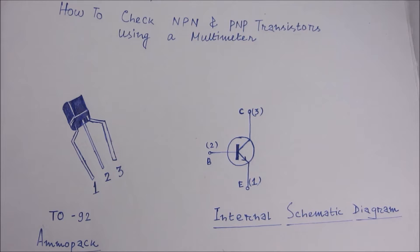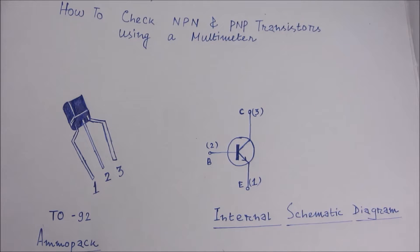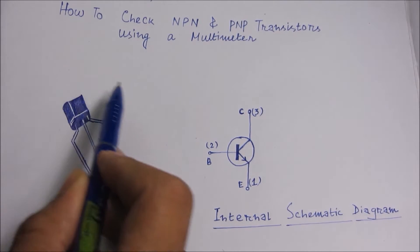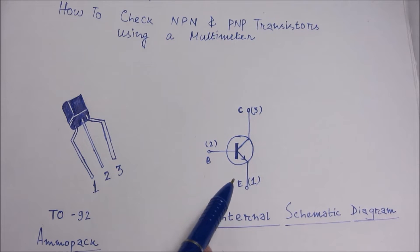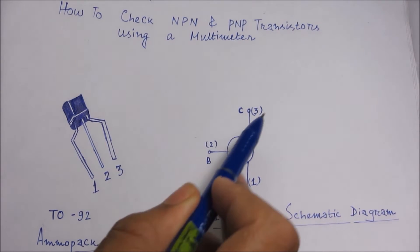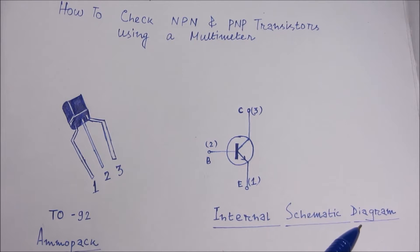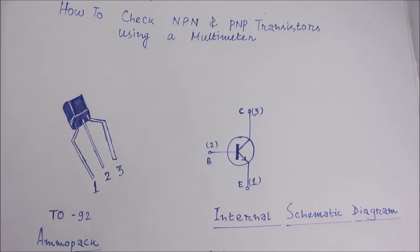Hello friends, we are Science Cards and today is the fourth tutorial video of basic science. We are going to show the basic differences in identification of NPN and PNP transistors. Here we have drawn a transistor with terminal one (emitter), terminal two (base), and terminal three (collector). This is the internal schematic diagram of the 2N3904, also known as the TO-92 package.